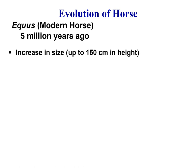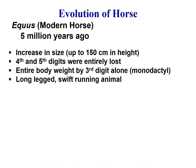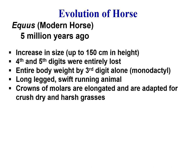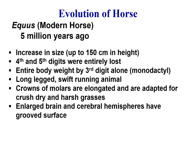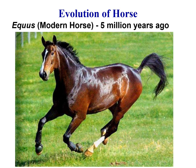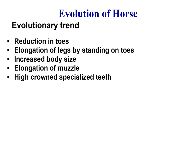Then came the modern horse, known as Equus, which originated around 5 million years ago, with size increased up to 150 centimeters in height. The fourth and fifth digits were entirely lost, and the entire body weight is now on the third digit alone — a condition called monodactyl. The animal has long legs and is a swift-running animal. The crowns of the molars are elongated and adapted to crush dry and harsh grasses. The brain and cerebral hemispheres are enlarged with a grooved surface. The modern horse has a highly developed skeleton, dentition, and brain.